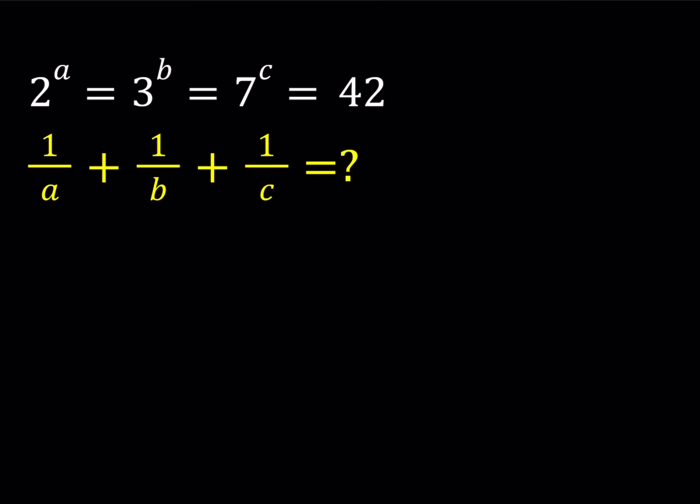2 to the power A equals 3 to the power B equals 7 to the power C, and that equals 42. We're supposed to evaluate 1 over A plus 1 over B plus 1 over C.